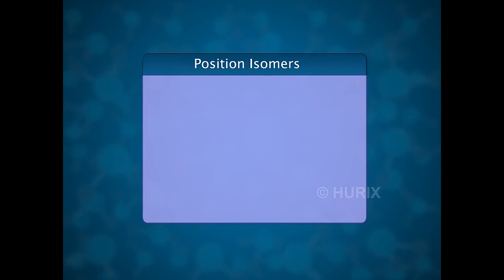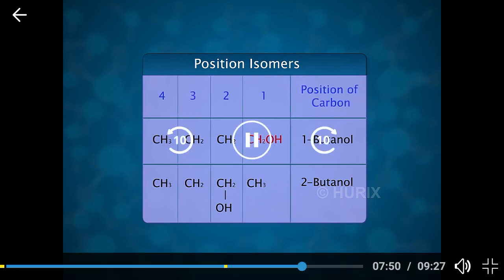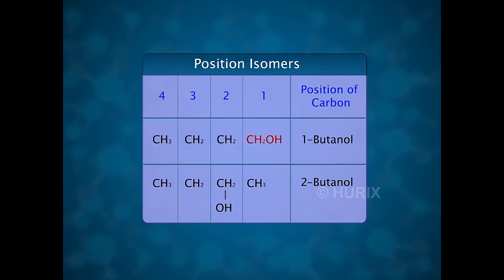Isomers differing by the position of functional group attached to the carbon atom are called position isomers. For example, 1-butanol and 2-butanol are position isomers. OH group is attached to the first carbon atom in 1-butanol and to the second carbon atom in 2-butanol. 1 and 2 in the name of the compounds represent the position of the OH group attached to their carbon chains.